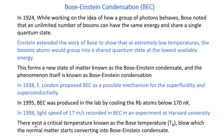For the Bose-Einstein condensation, there exists a critical temperature known as the Bose temperature, represented by Tb, below which the normal material starts converting into the Bose-Einstein condensate. This is the temperature at which the phase transition from the normal state to the Bose-Einstein condensate begins — just like below 0 degrees centigrade, water starts converting into ice.